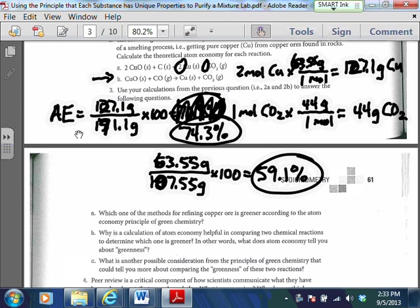And then for our second one, it's 63.55 divided by, and I did the total wrong on that one too, didn't I? The total's going to be 107.55 here. So then the atom economy ends up being more like 59.1%. So again, if the atom economy is just how much of the desired product are we making compared to how much waste product, the next natural question that they would ask here on 3A, which one of these methods is greener according to the atom economy principle?